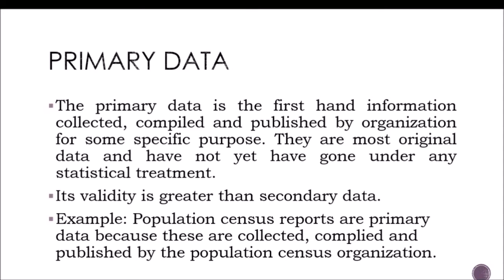Population census reports are primary data because they are collected, compiled, and published by the population census organization. Basically, primary data is first-hand information — the raw data that is collected and has not undergone any statistical treatment, normalization, or other statistical treatments applicable to that certain data.